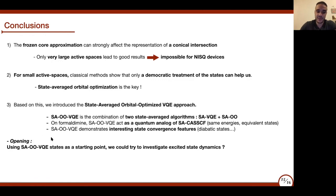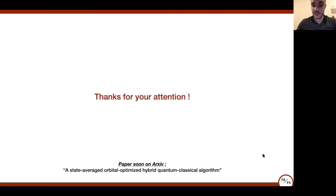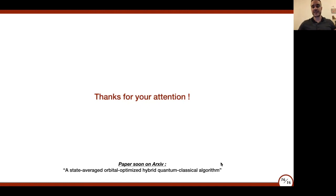As an opening for future work, I think that using state-average orbital optimized VQE states could be a very good starting point if, for example, we would like to investigate excited state dynamics—something we should pursue in the near term. This is the end of my talk. I would like to thank all of you for your attention. If you're interested in the paper, it has been put on arXiv under the name 'state average orbital optimized hybrid quantum classical algorithm.' Please go and find this paper for more details. Thanks again for your attention.